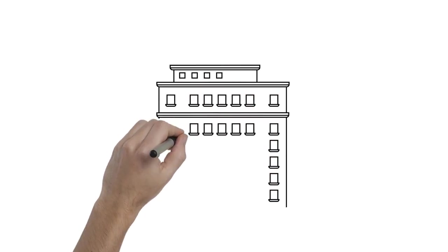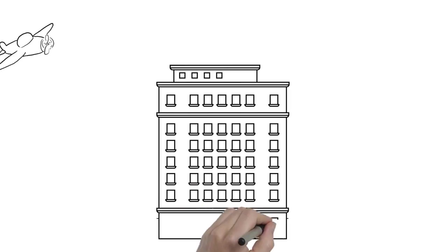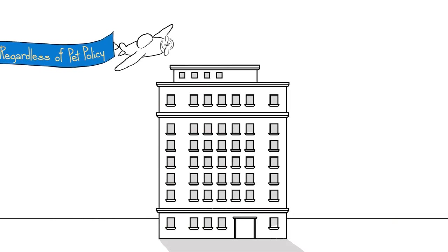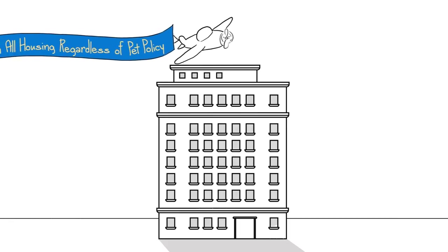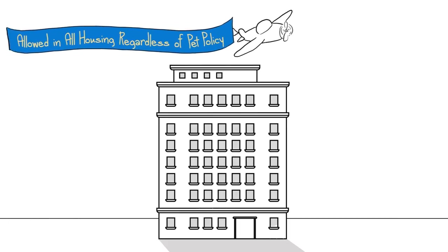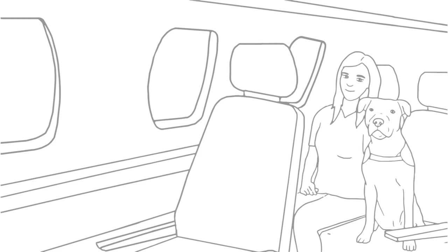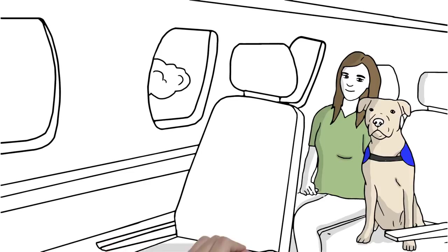Leah discovered that having an emotional support animal offers her certain legal protections. For example, she is allowed to live with her animal, regardless of her landlord's pet policy. The landlord can't charge pet deposits or pet rent either. Plus, they are allowed to fly inside the cabin of a plane for free.